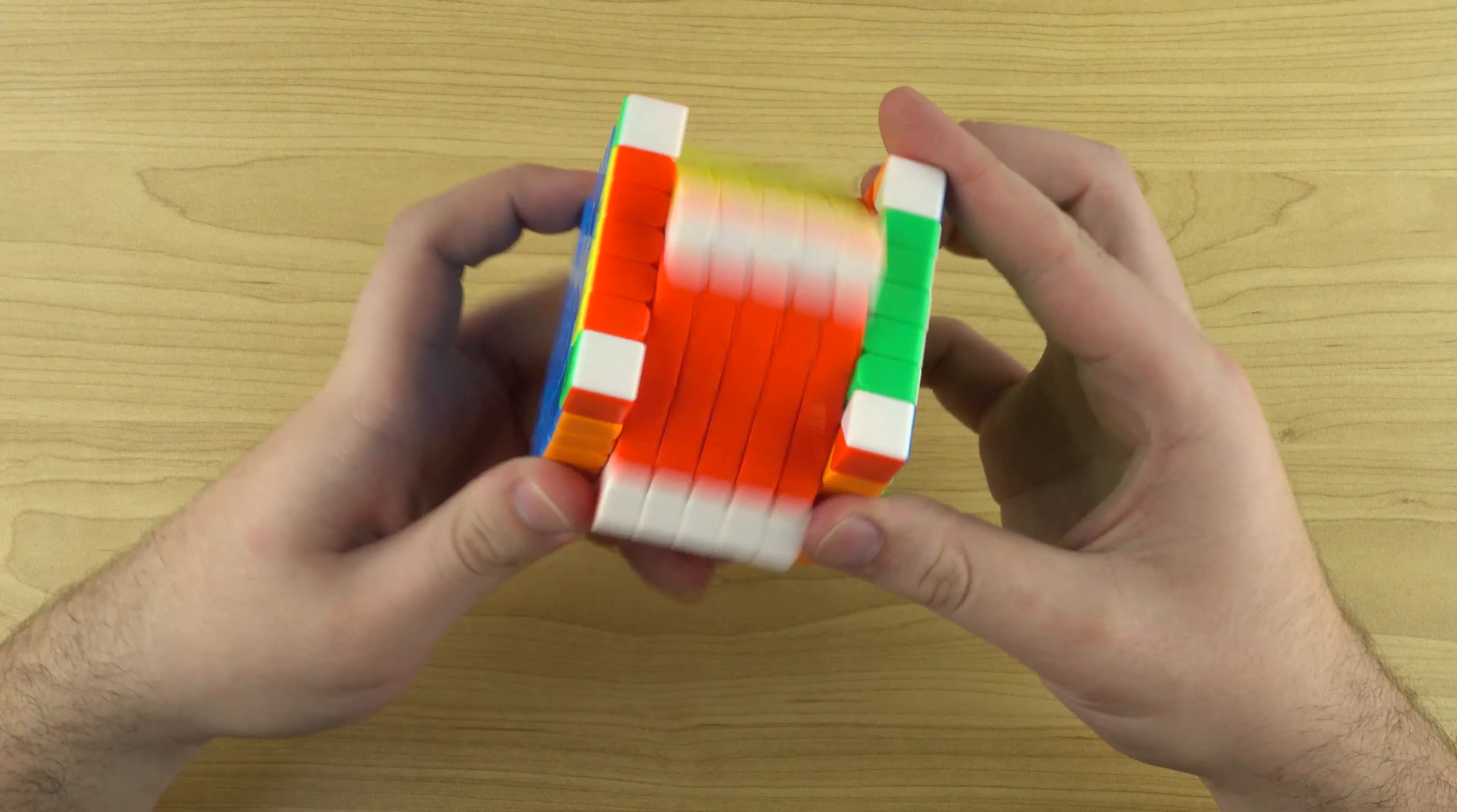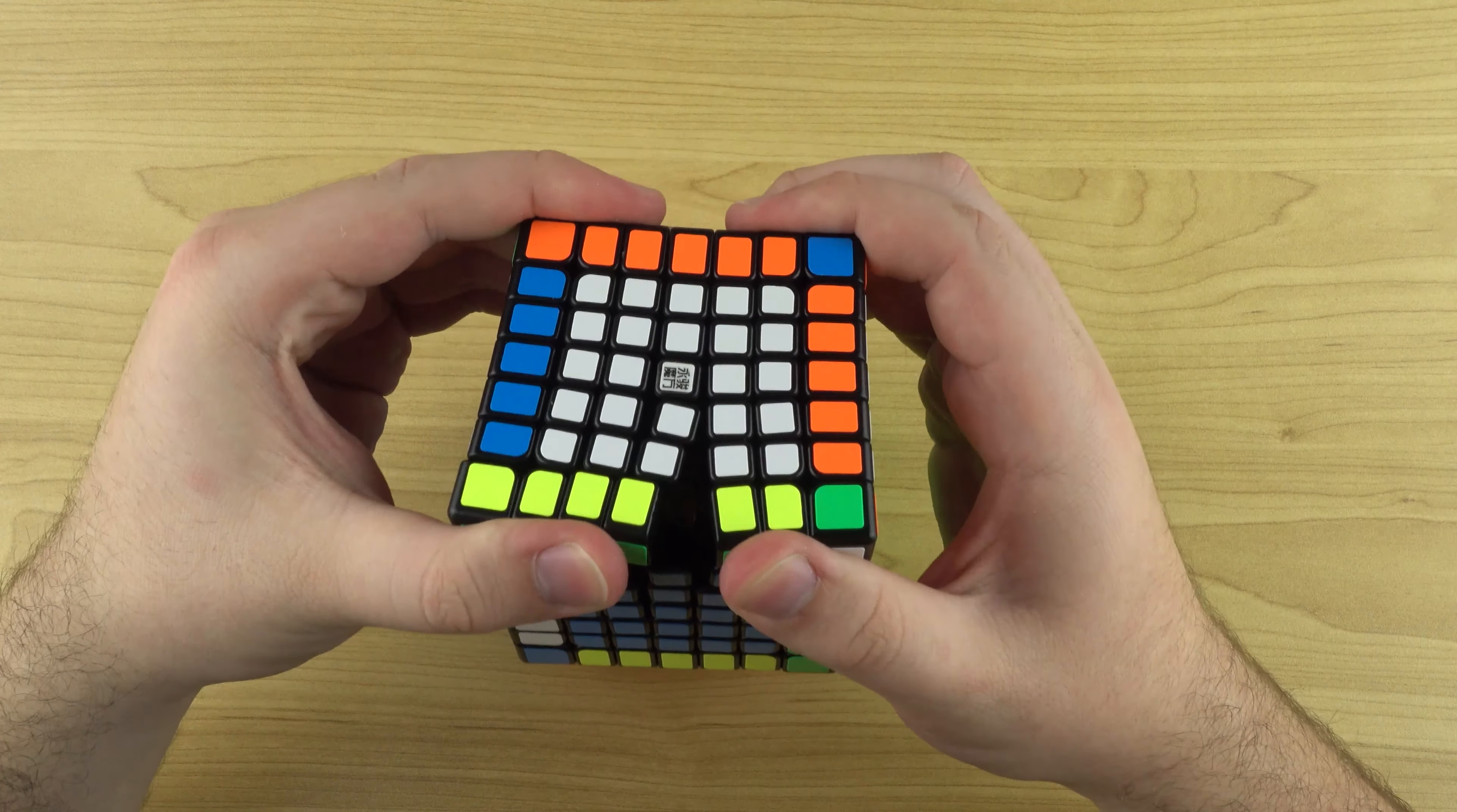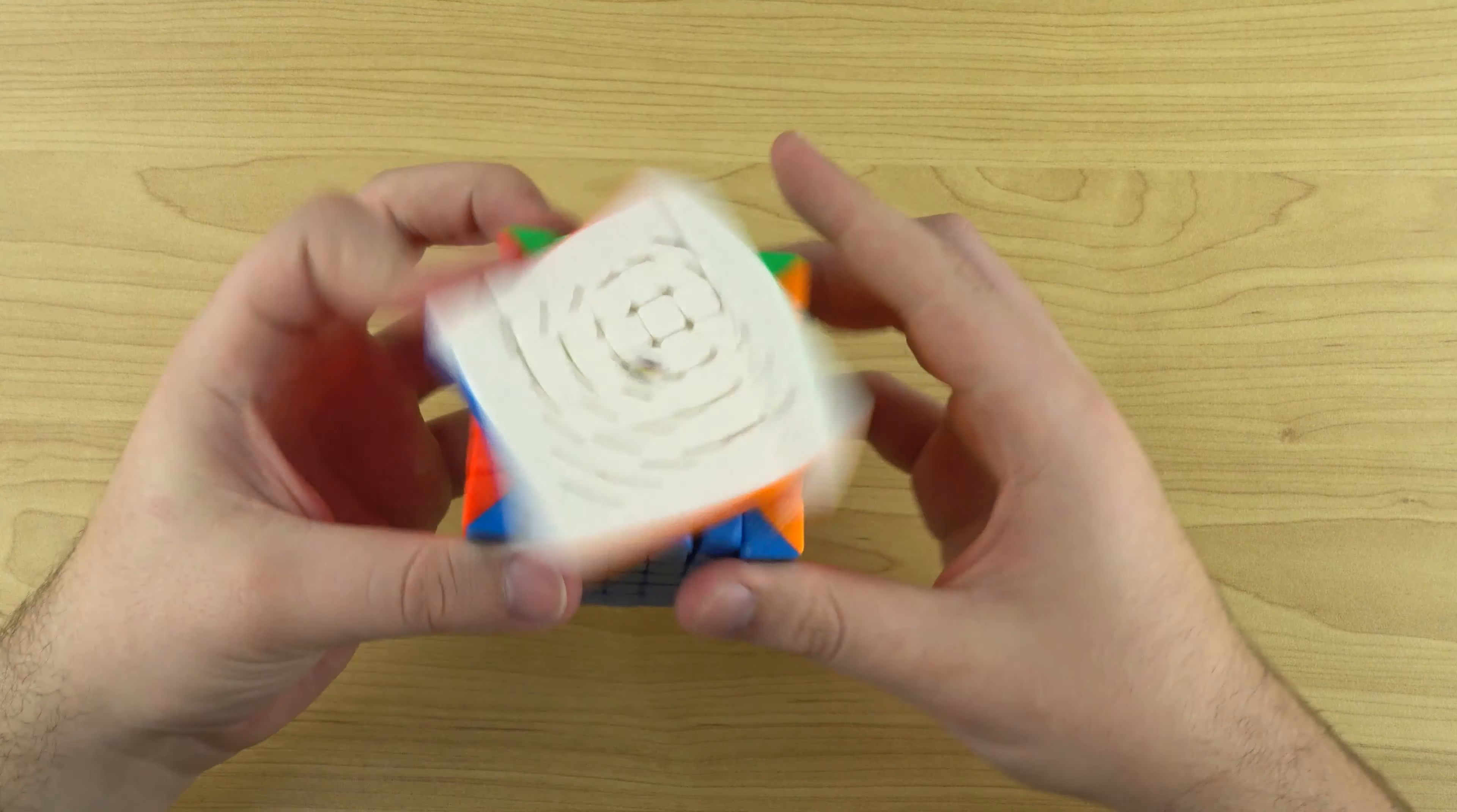Okay, first impression, the tensions definitely are very tight. Part of the benefits of having magnets is you can be a little bit loose from the tensions, and that helps improve corner cutting. But out of the box, tensions are very tight.